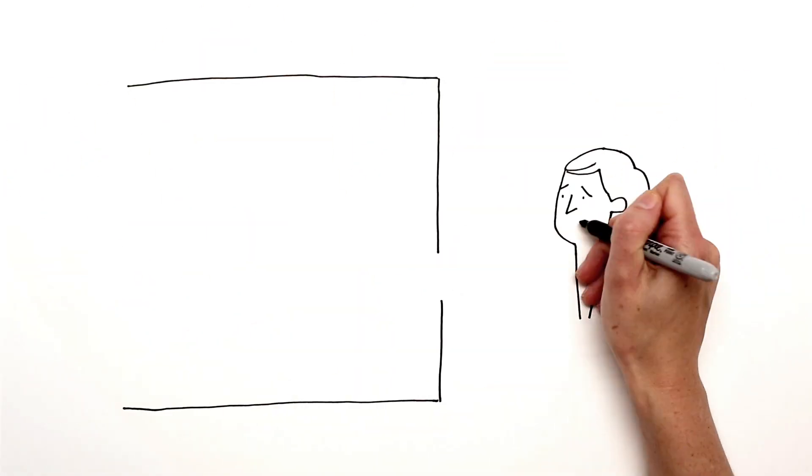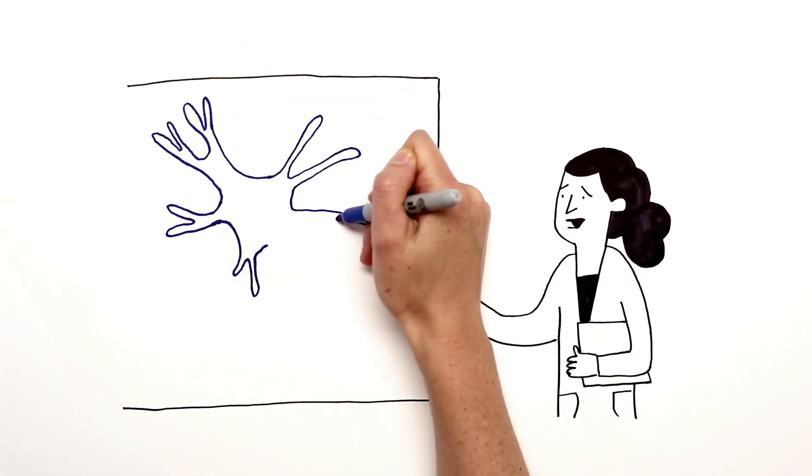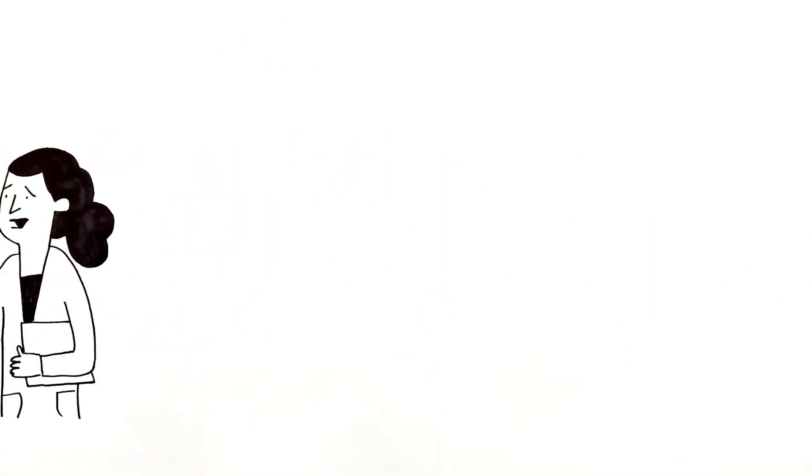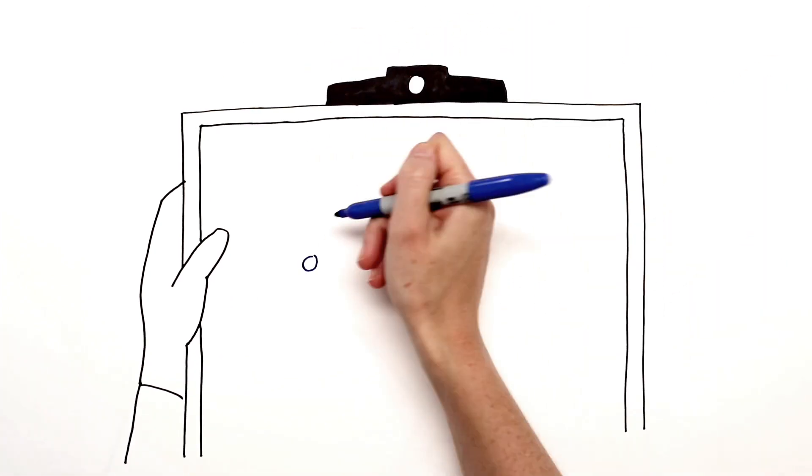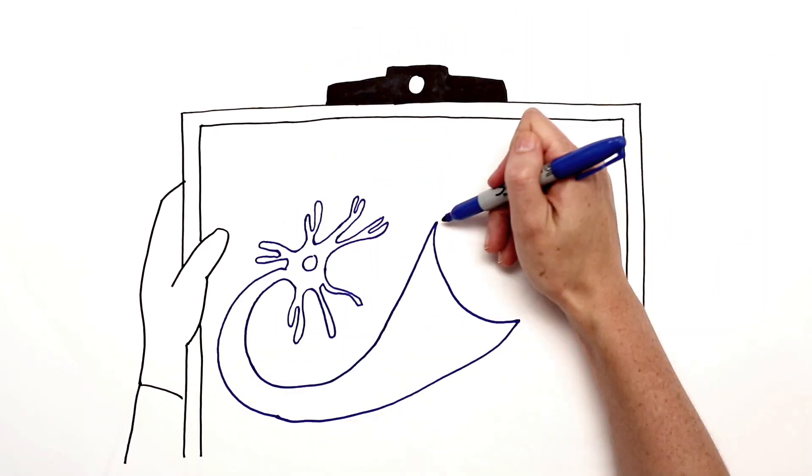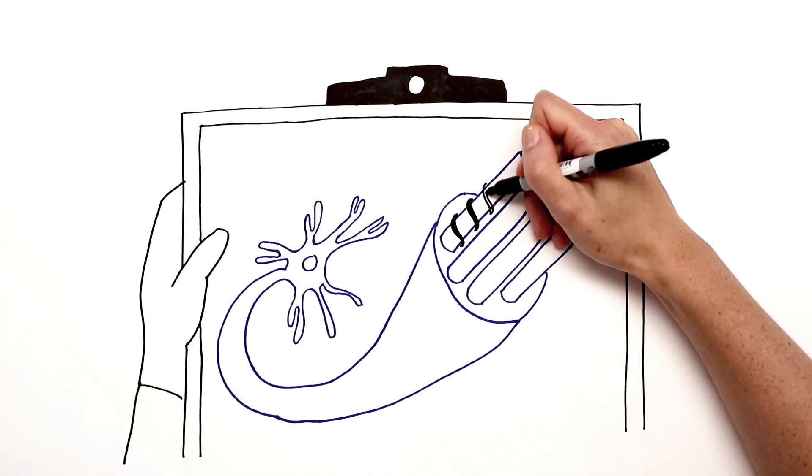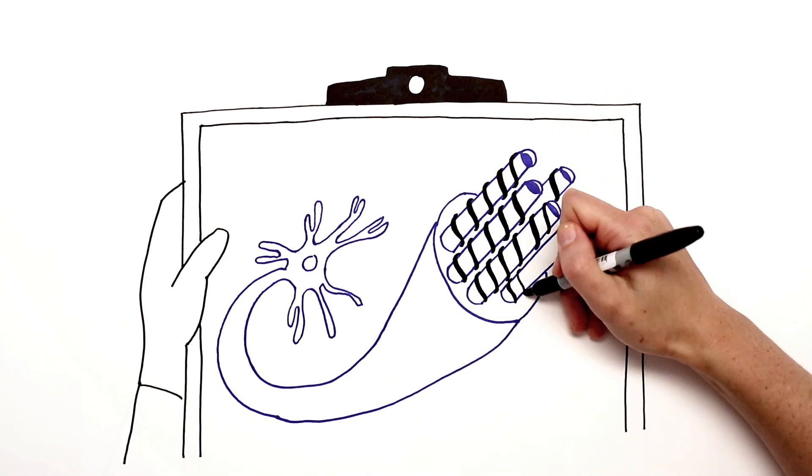Tau tangles occur inside neurons and are made up of pieces of tau protein. Healthy brain neurons are supported by a framework of microtubules that play a crucial role in maintaining communications between neurons. Tau proteins help keep the system stable.